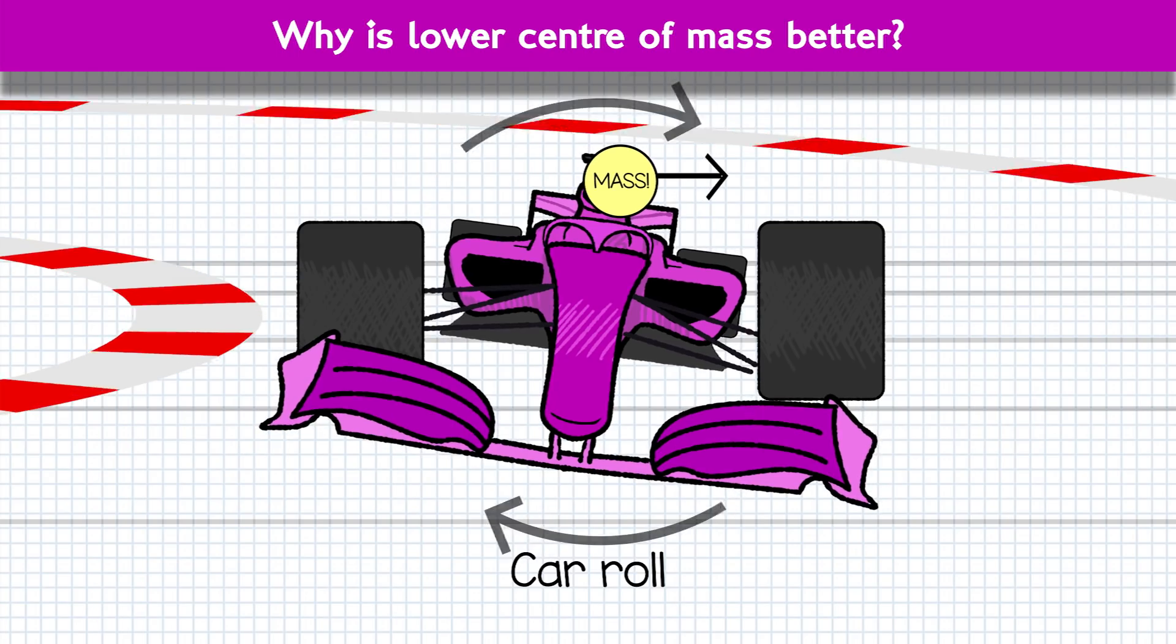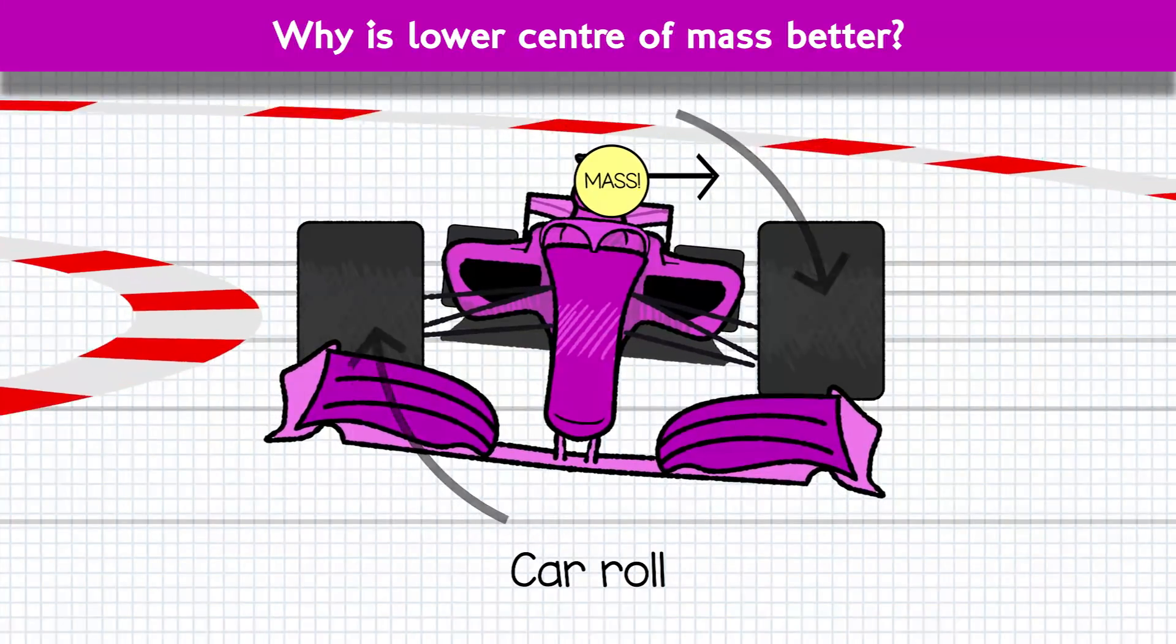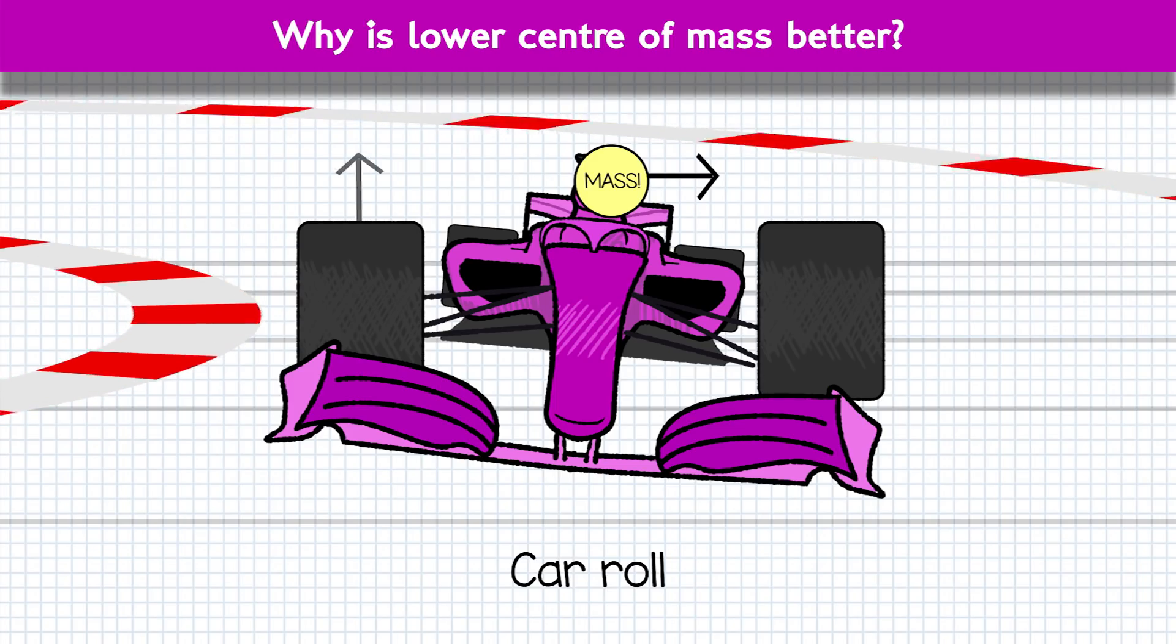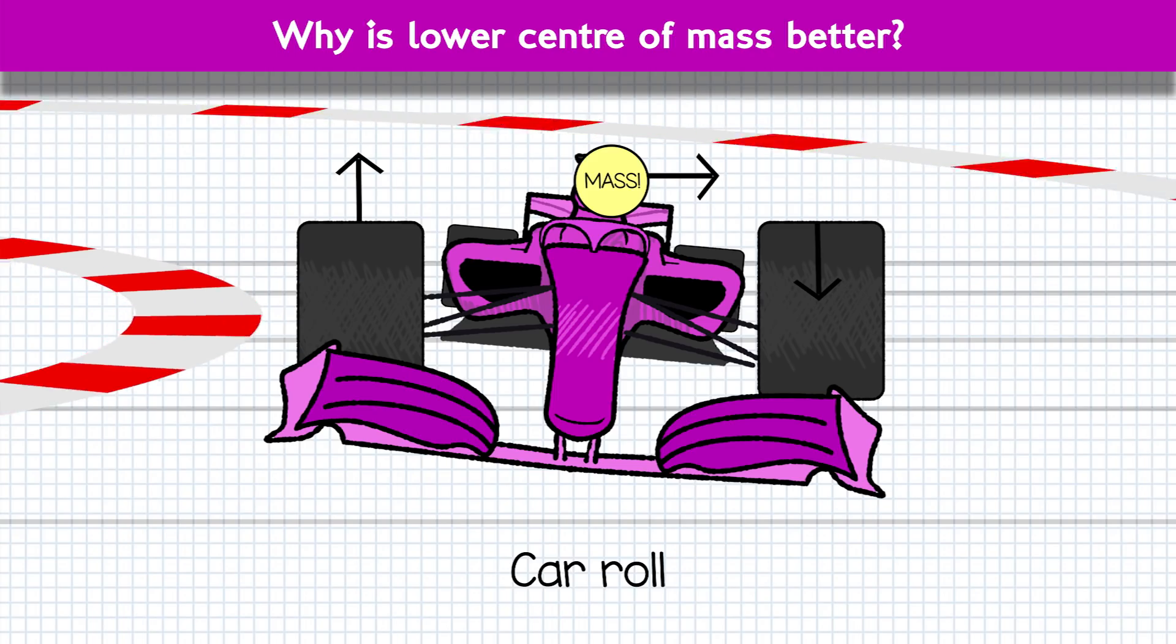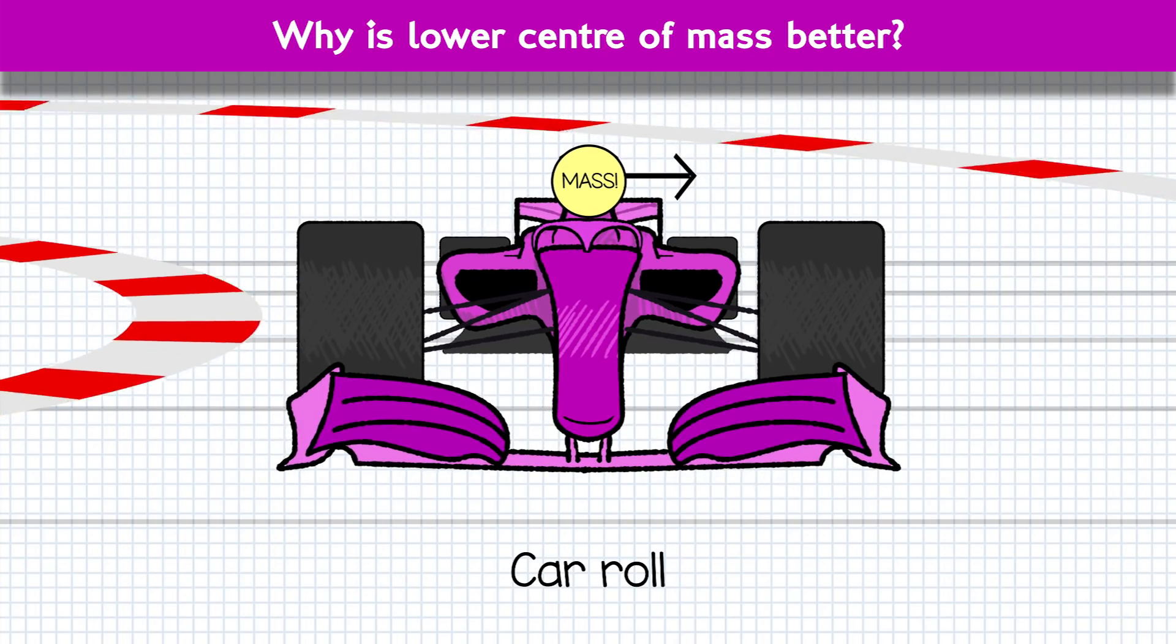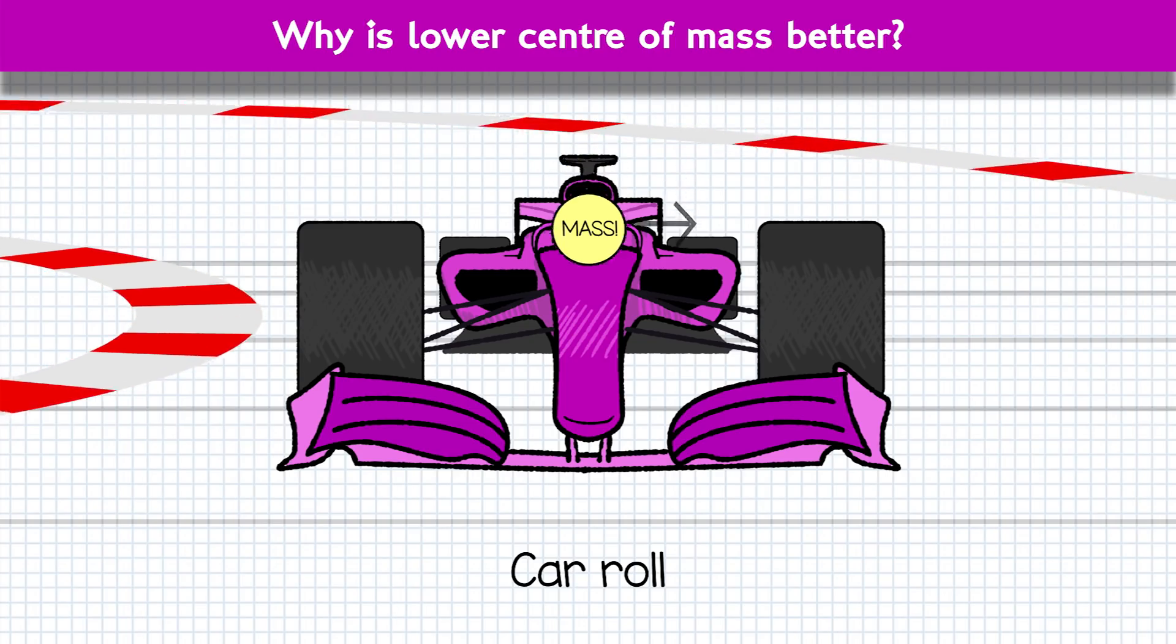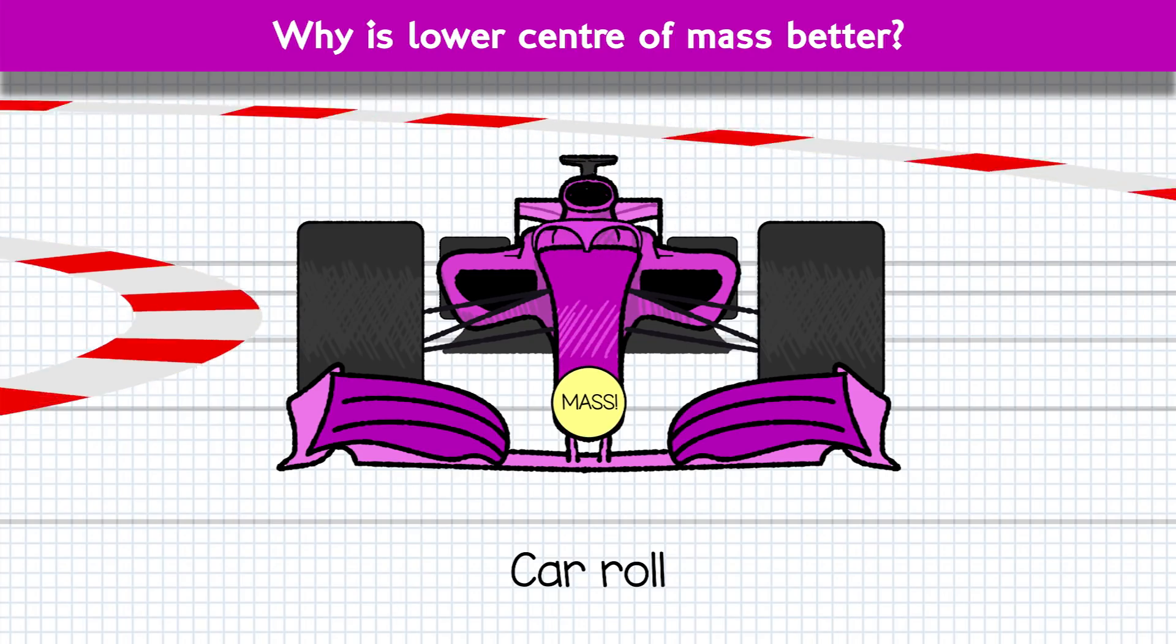The problem with the car rolling too much is it starts to unbalance the tyre loads. The inside tyres start to lift and the outside tyres take all the weight. Body roll is heavily controlled by suspension engineering, but that's definitely for another video. So bringing the overall weight down as low to the ground as possible is a great help at reducing body roll and keeping the car balanced through the corners.